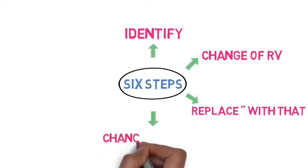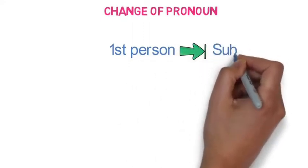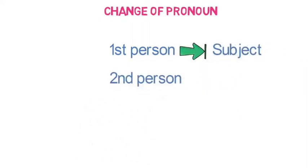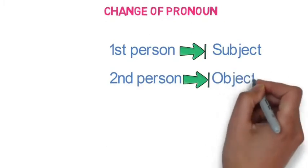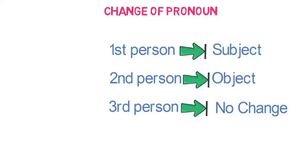The fourth step is the change of pronoun. Pronouns identified in the reported speech will be changed as follows: first person will be decided as per the subject; second person will be decided as per the object; and third person will remain unchanged. You can remember this change with the acronym S-O-N — also called 'son.' Please remember: first person converts to subject, second person converts to object, and third person remains unchanged.